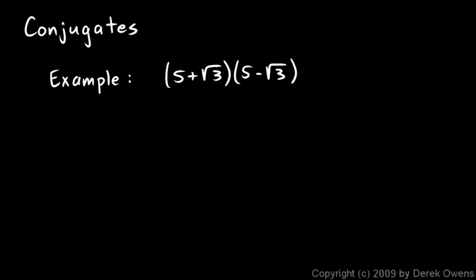Now let's talk about conjugates, and I'll start this with an example. I have 5 plus the square root of 3 times 5 minus the square root of 3. These two things are multiplied together, and I'll do a FOIL.